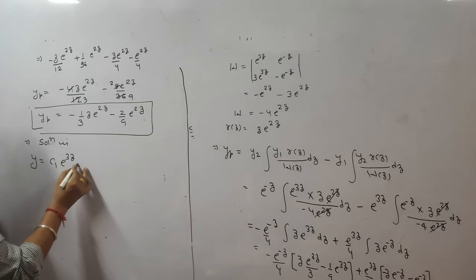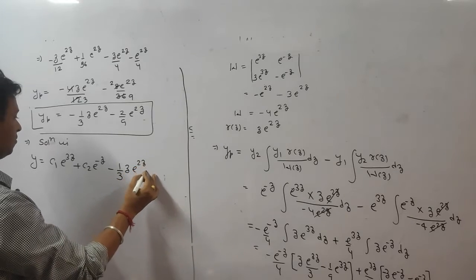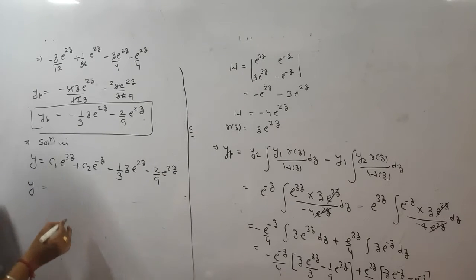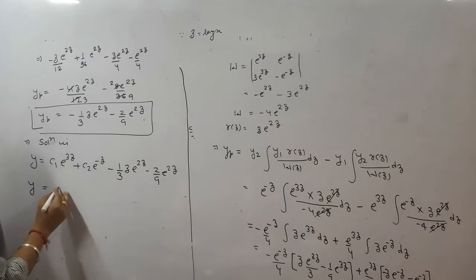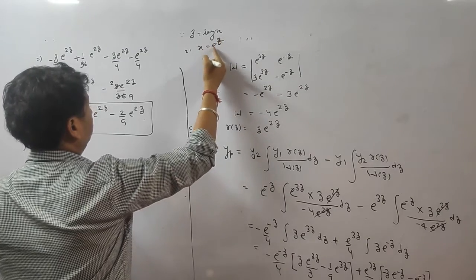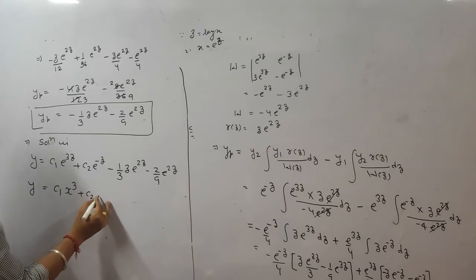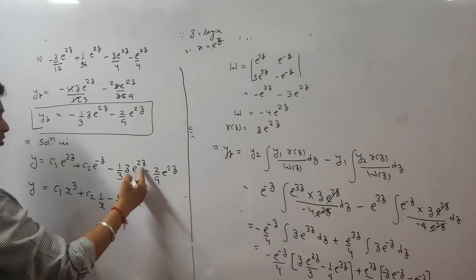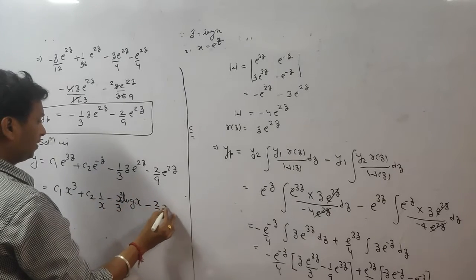The complete solution is y = yc + yp = c₁ e^{3z} + c₂ e^{-z} + yp. Now convert back to x using z = log x: e^{3z} = x³, e^{-z} = 1/x, z = log x, e^{2z} = x². Substituting: y = c₁ x³ + c₂/x + yp expressed in x, with terms like -2x²/9.